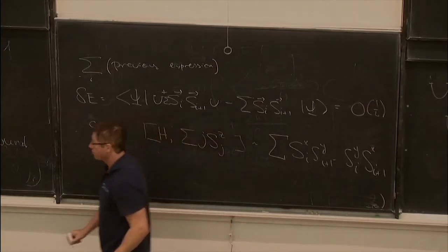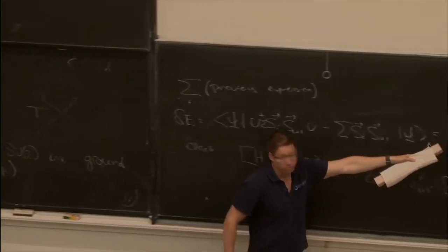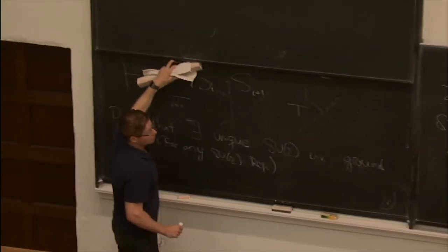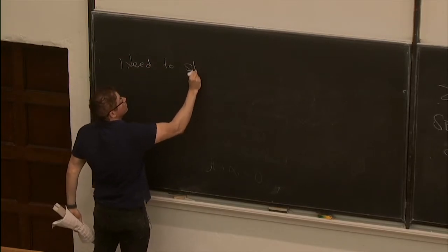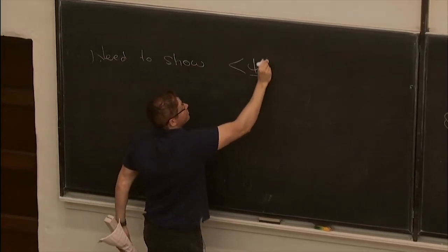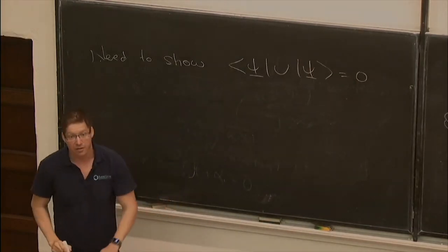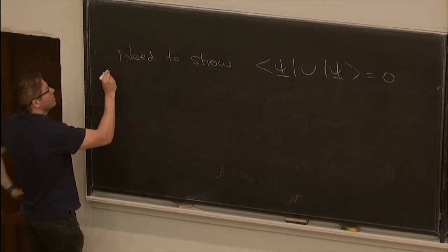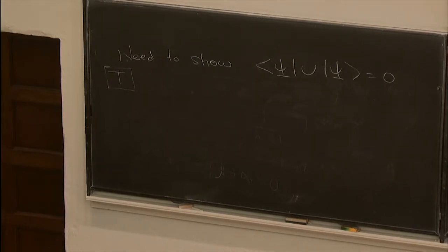Why isn't the proof complete yet? We also need to show that the new state constructed is orthogonal to the ground state, i.e., ⟨ψ|U|ψ⟩ = 0. Here the half-integer nature of the spins is important, and crucially we need to use translational symmetry, which we haven't used yet.